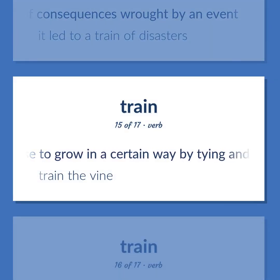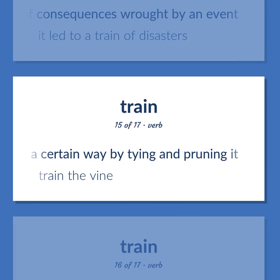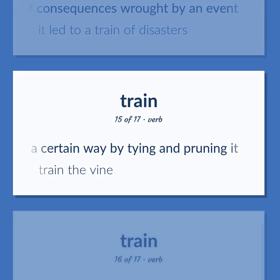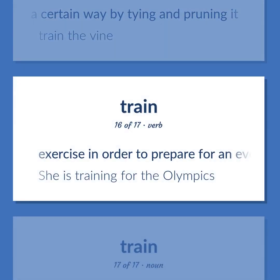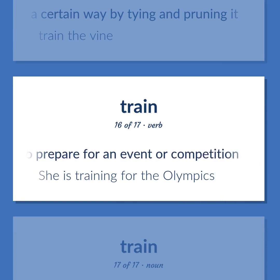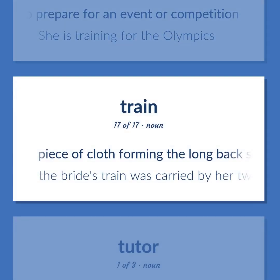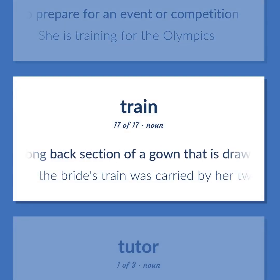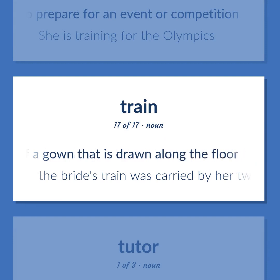Cause to grow in a certain way by tying and pruning it. Train the vine. Exercise in order to prepare for an event or competition. She is training for the Olympics. Piece of cloth forming the long back section of a gown that is drawn along the floor. The bride's train was carried by her two young nephews.